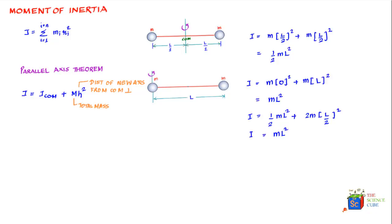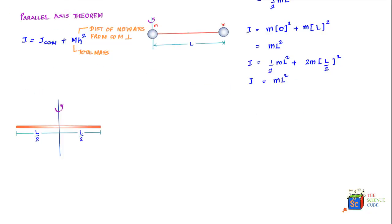So far it's been easy to find the moment of inertia for a discrete system of masses. But what if you have a continuous mass rotating about an axis — for example, a continuous rod rotating about an axis through its center of mass? It's not practical to take every tiny mass along the rod and multiply it by the square of its distance; that would take a very long time and still not give an accurate result. So we use integral calculus.